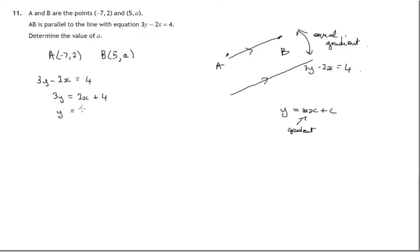Everything on the right hand side gets divided by 3. We can now compare that with y = mx + c, and we can see that m is equal to 2/3. So the gradient of the line 3y - 2x = 4 is 2/3.